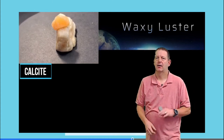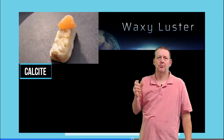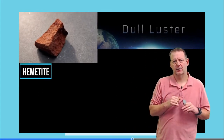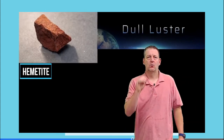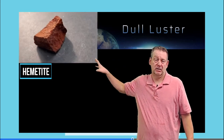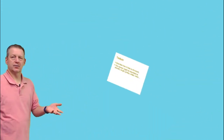Waxy luster, seen in calcite, has a wax-like appearance — comparing it to a piece of wax side by side helps illustrate this. Dull luster, like hematite, looks like rust with almost no reflection — it tends to absorb light and has no sparkliness to it. You might also call this earthy luster.